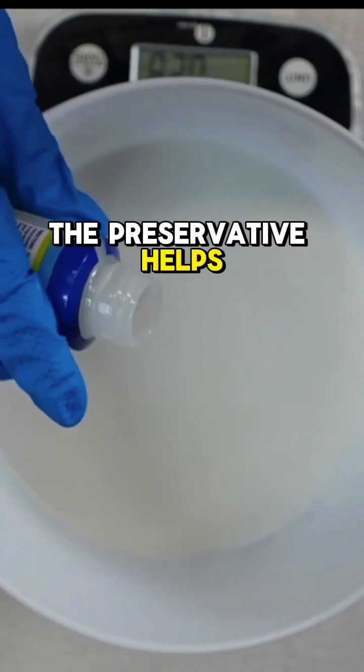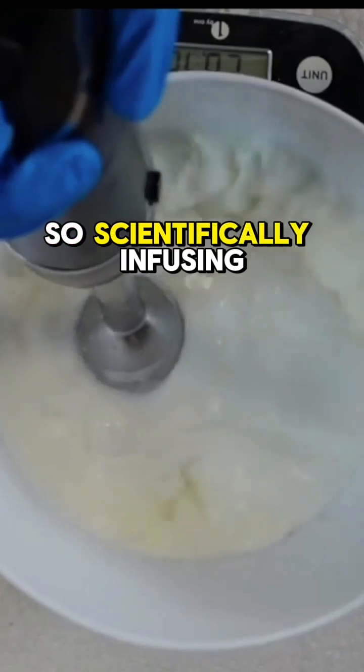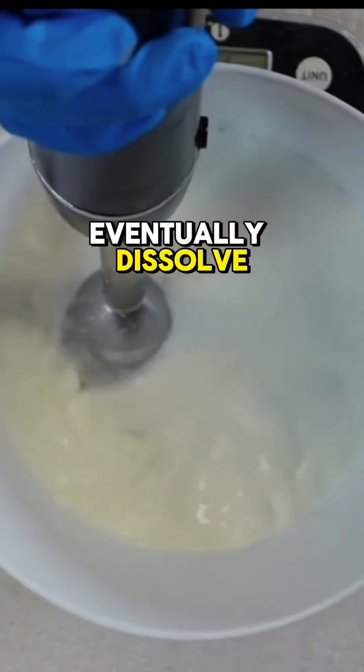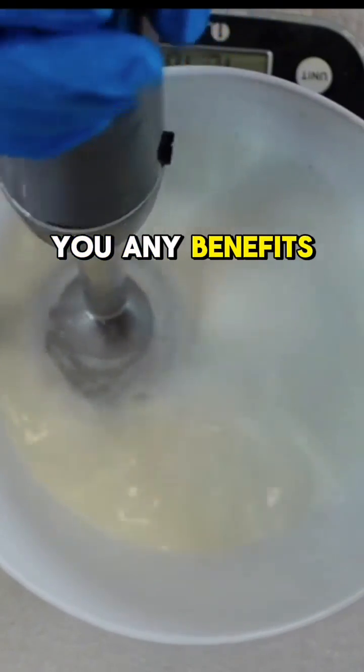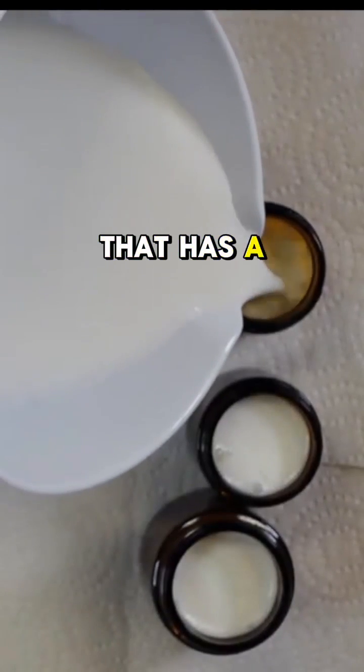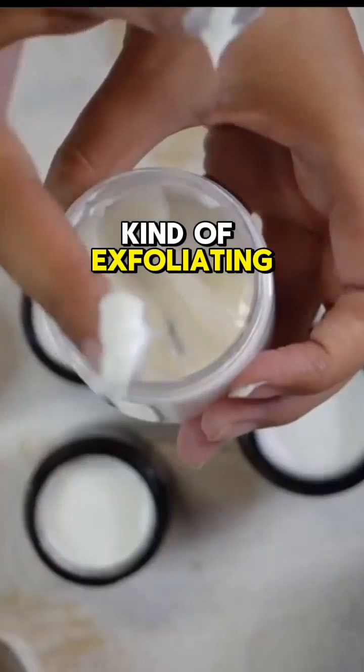and the preservative helps keep it fresh. So scientifically, infusing magnesium flakes into tallow, while they will eventually dissolve, will not give you any benefits of the magnesium. You will just make a tallow that has a slight kind of exfoliating effect. And that is it.